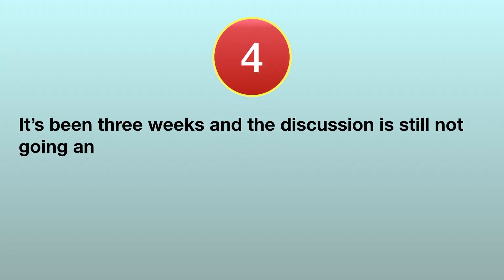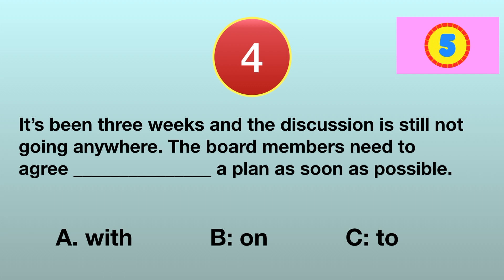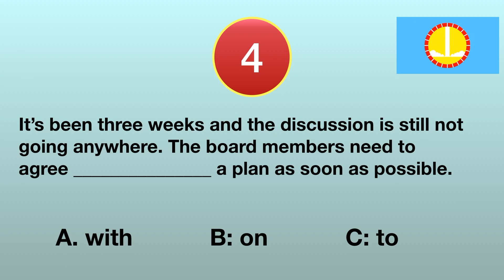Number 4. It's been 3 weeks and the discussion is still not going anywhere. The board members need to agree on a plan as soon as possible. A. With, B. On, C. To. The correct answer is B. On. The discussion is not going anywhere means there hasn't been much progress. The reason is probably that the board members have different opinions. To make things go forward, they need to reach an agreement — to agree on a plan.